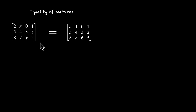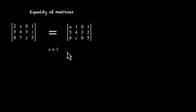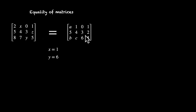And we can also find the missing elements. For example, what's the value of x? If these two are equal, x has to be equal to 1. What about y? y has to be equal to 6. And z? z has to be equal to 2. z is the last element of the second row, so the last element of the second row is 2, so z is equal to 2.